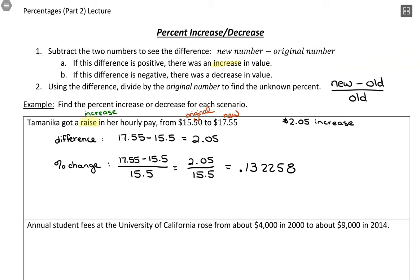They don't say what to round to here, so I'm going to round to, in percentage form, one decimal place. So if I'm changing to a percentage, it'll be 13 point, and I'm just going to round to that place right there, so 13.2% is the increase. That's a very nice raise for a job, so Tamanika had a 13.2% increase in hourly pay.